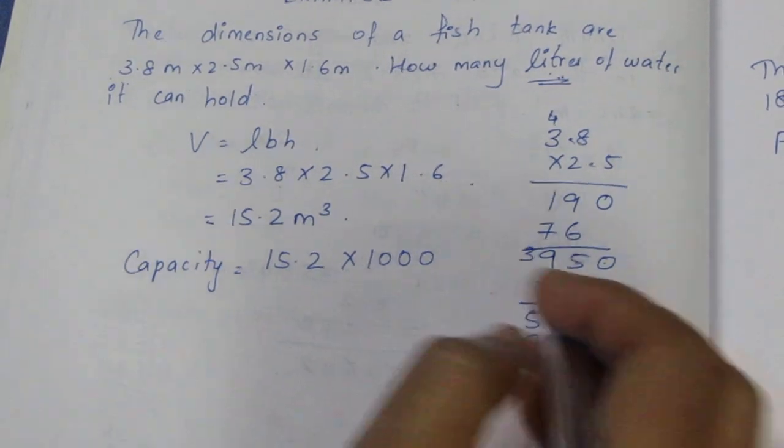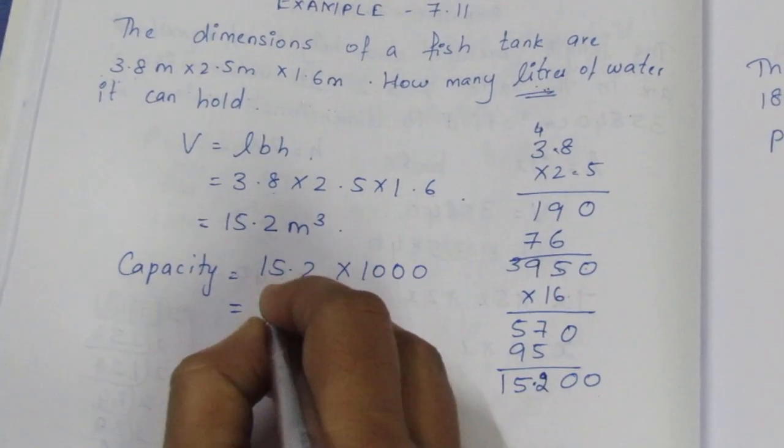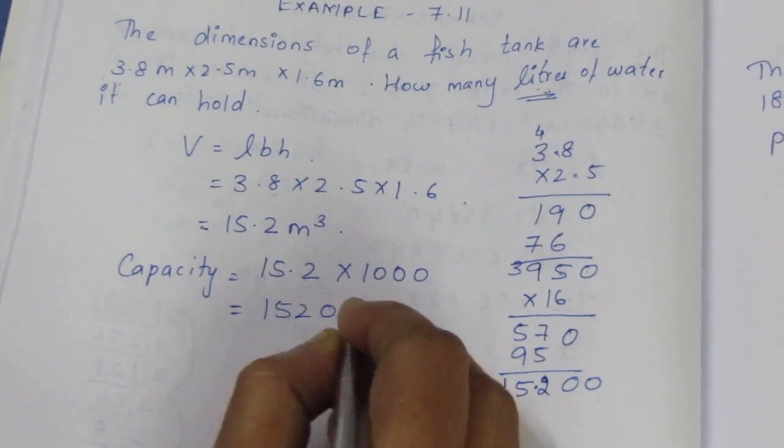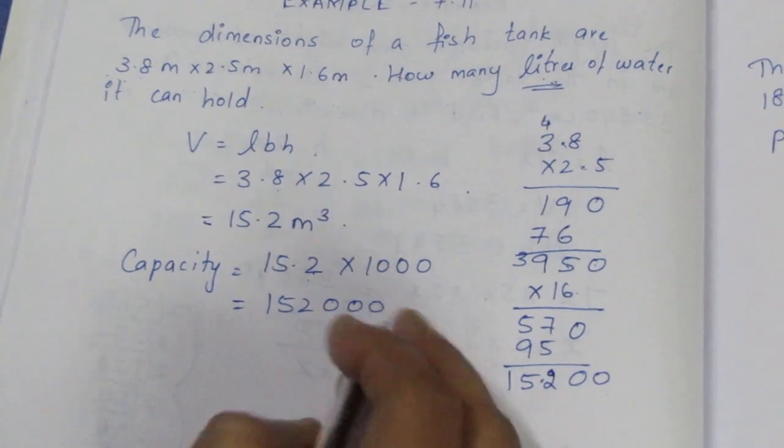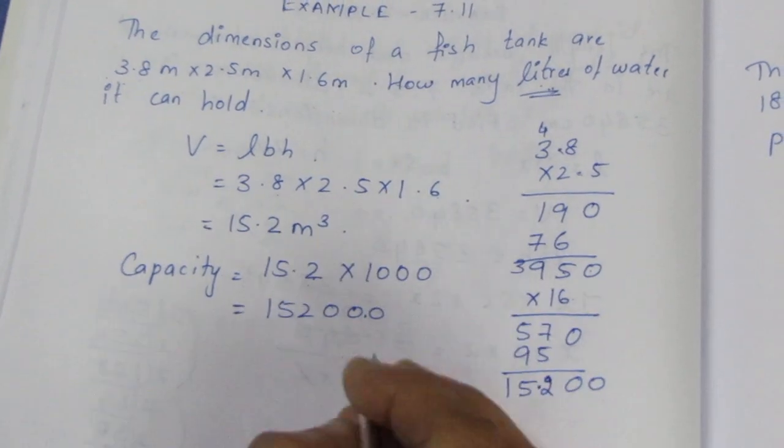To convert to liters, we multiply by 1000. When you multiply by 1000, you move the decimal point three places to the right.